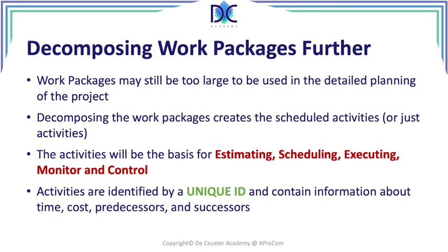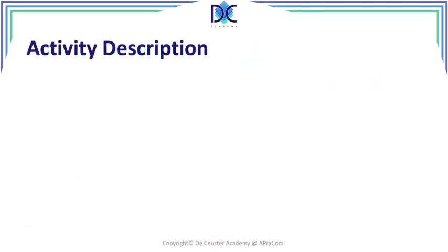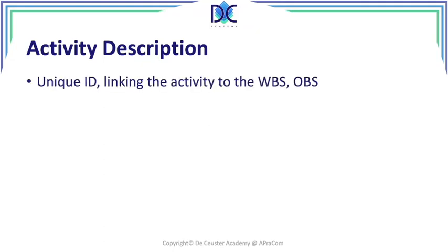We can add information about who will be doing the activity. There are different possibilities of information we can add to activities. They are the basis for creating the detailed plan and we will use them when using the precedence diagramming method or different ways to create a project diagram or project schedule. Each activity has a unique ID and we can link it to the WBS and the OBS — the organizational breakdown structure — so we link the activities of the WBS to the organizational structure.